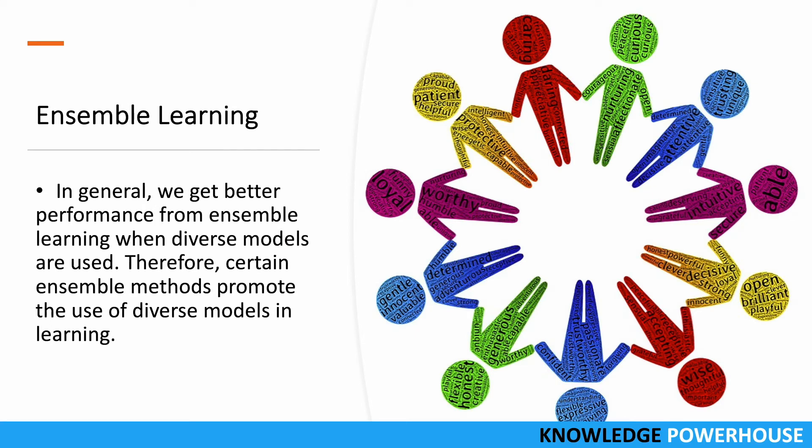In general, we get better performance from ensemble learning when diverse models are used. Instead of using the same model again and again, we can use diverse or multiple kinds of models, and certain ensemble methods promote the use of diverse models. Alternatively, we can use the same model with different hyperparameters and combine the results. Both approaches are possible.